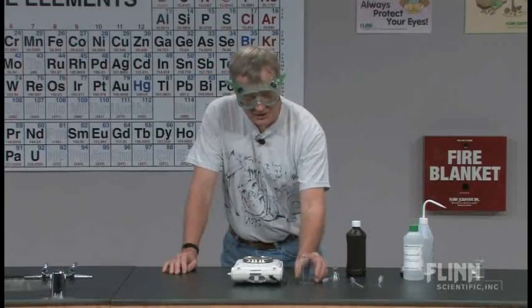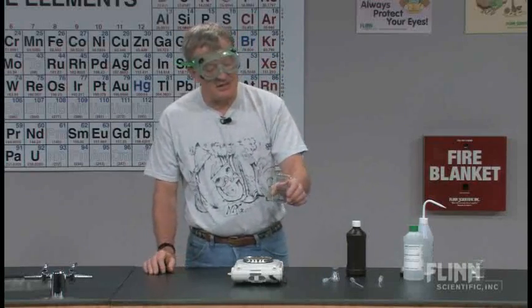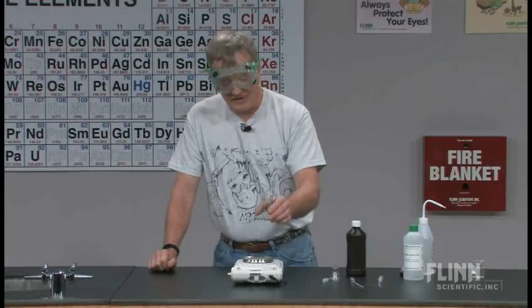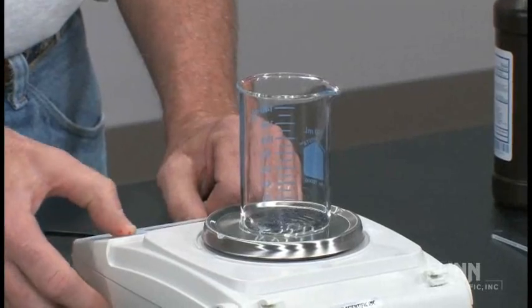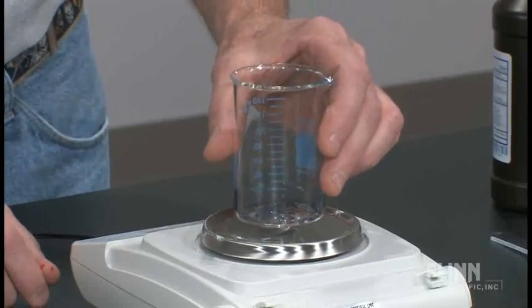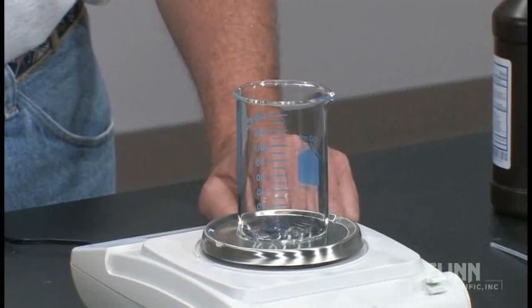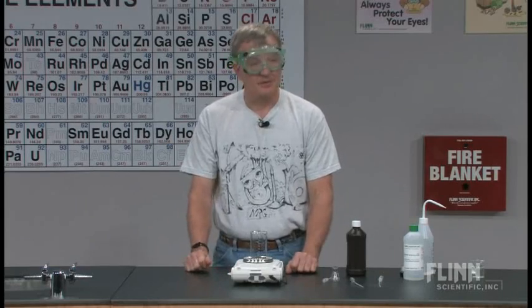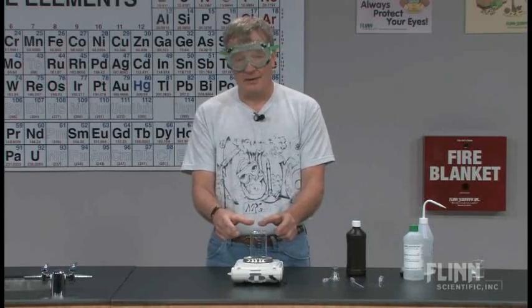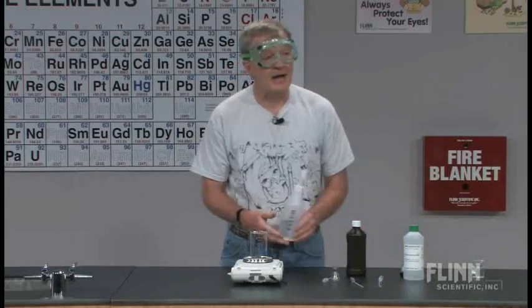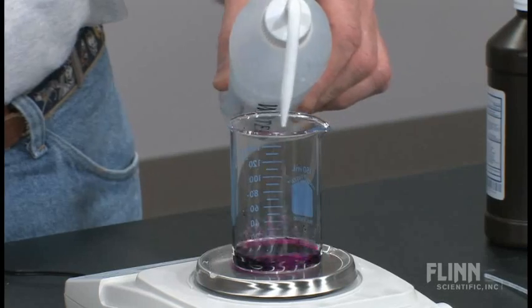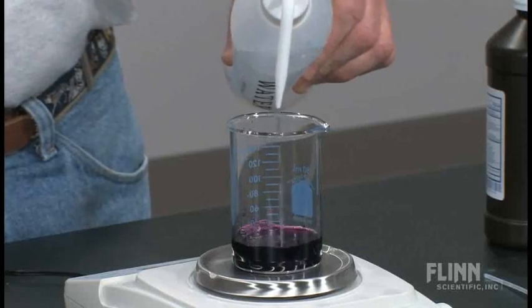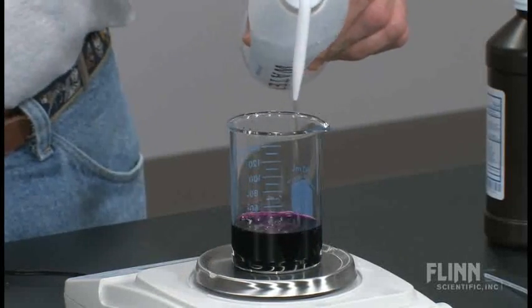What I've done ahead of time is I've already weighed out and placed into this beaker 1.58 grams of potassium permanganate. I'm going to turn the balance on first, set that on top of the balance, and zero it out. I now have in here 1.58 grams of potassium permanganate. I am going to add to that 100 milliliters of water. I honestly don't care if it's 100 milliliters exactly. I'm just going to add some water to it. I'm going to use the graduations on the side of the beaker because the accuracy here is irrelevant.